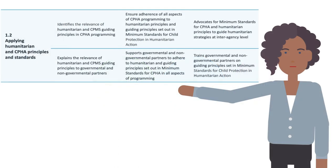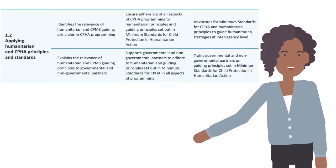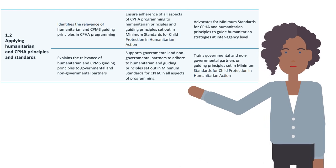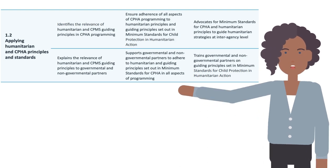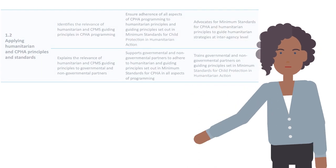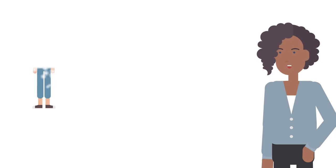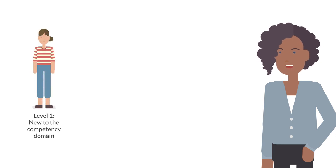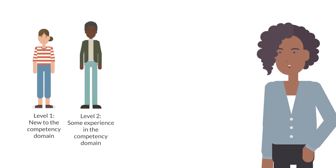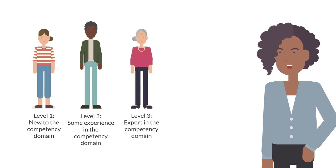Each competency and core value is broken down into behavioral indicators, which are designed to show what effective performance looks like and provide examples of how to demonstrate the competency. The behavioral indicators for each competency are listed at three levels. Level 1 describes individuals who are rather new to the relevant competency domain. Level 2 describes individuals with some experience from a few assignments across different CPHA contexts in the relevant competency domain. Level 3 describes individuals who are experts in the relevant competency domain and can train others on this.